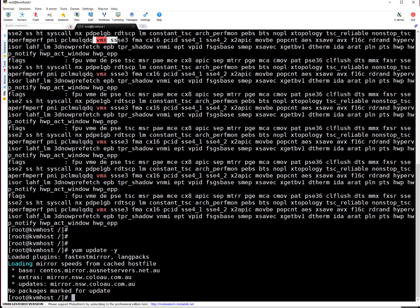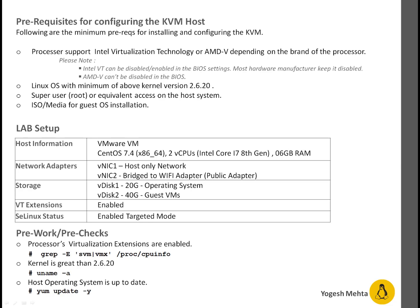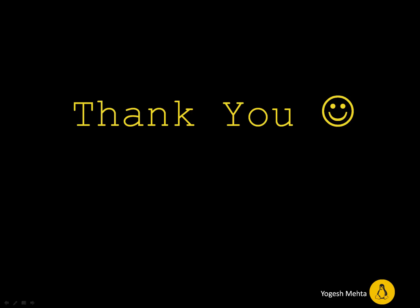Let's update the system with `yum update -y`. This system is already updated so no packages are marked for update. In case your system gets updated, just do a clean reboot after this. So with this I can confirm: my system supports VT, kernel requirements are met, and the system is up to date — we are ready for the next steps for installing KVM. That's it for this session, guys. Thank you.